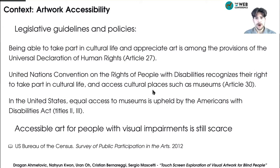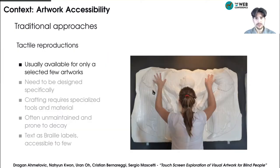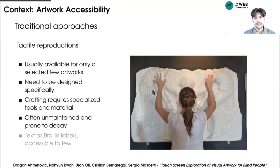However, prior literature highlights that for blind people, accessible artworks are rarely available in practice. Traditionally, blind people can access visual art through tactile reproductions or through audio descriptions, which are conveyed using audio guide devices or during live tours. The tactile reproductions, however, are not available in all art venues, or when available, they are available only for few selected artworks. Tactile reproductions also need to be specifically designed to effectively convey visual aspects of the artwork through surface height variations. They usually need to be crafted with special materials and using specialized tools, and they are often left unmaintained, which makes them prone to decay through prolonged use.